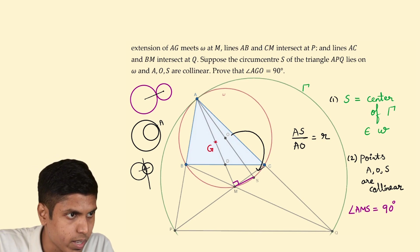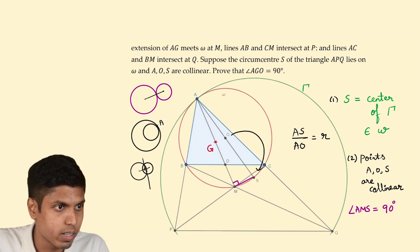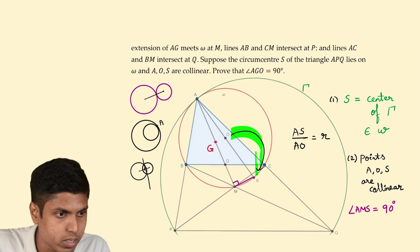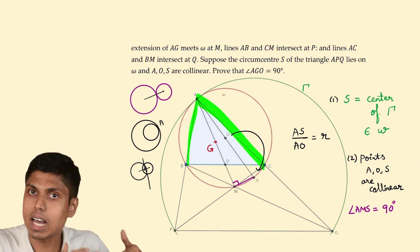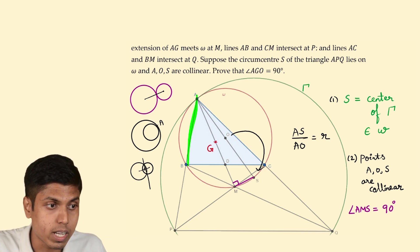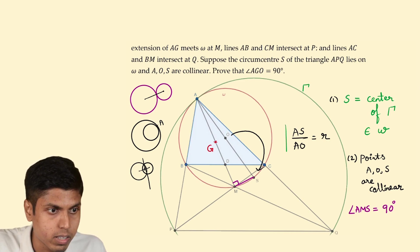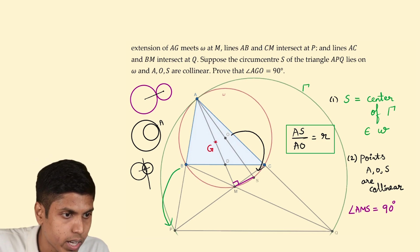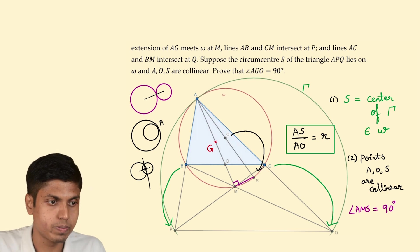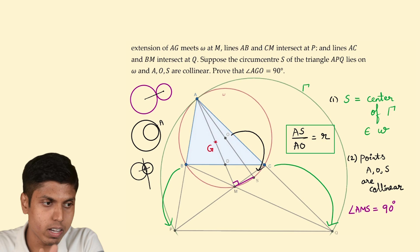Since this homothety takes the point O to S, then the corresponding homothety of B and C should take the points that correspond to the transformed B and C after homothety. We know that the smaller circle goes to the larger circle upon homothety because that's how we define the ratio of homothety. Hence, B must go to P and C must go to Q.